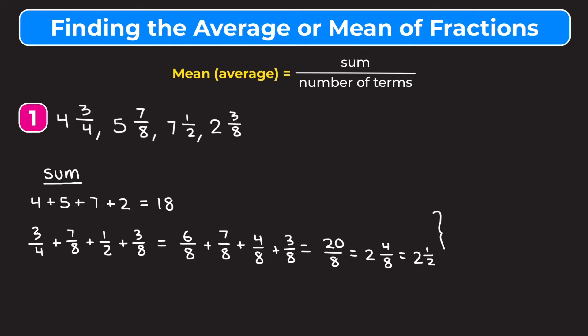So now to find the overall sum of our numbers, we need to add 18 plus two and a half and 18 plus two is 20. So we get 20 and one half.